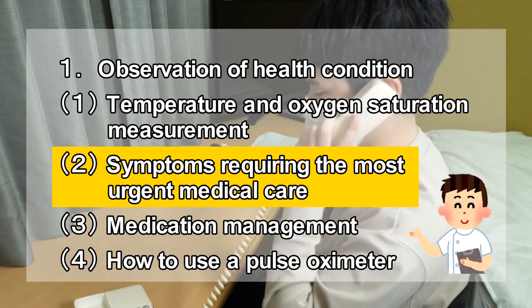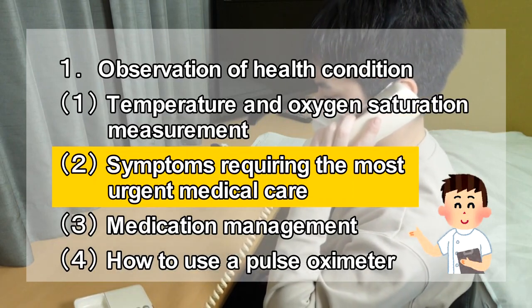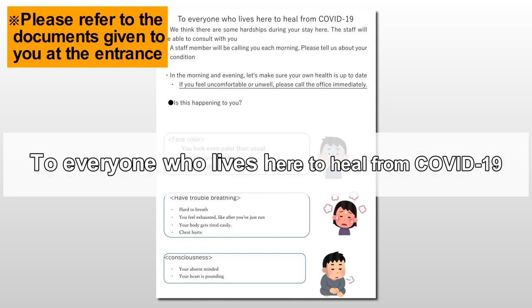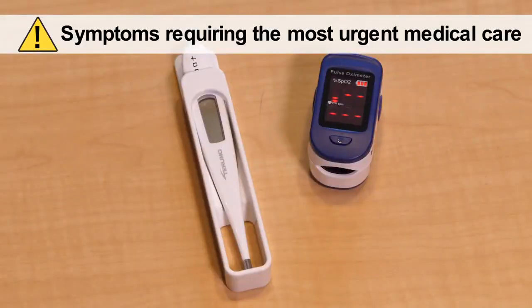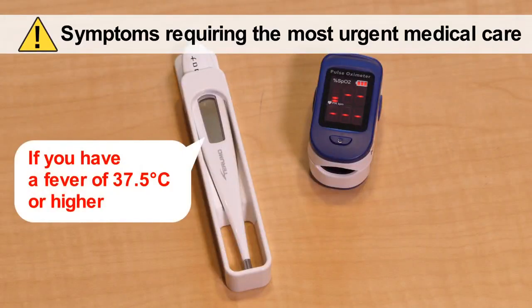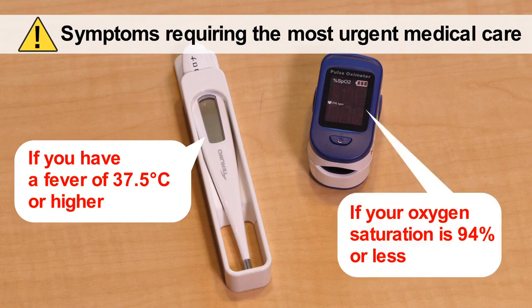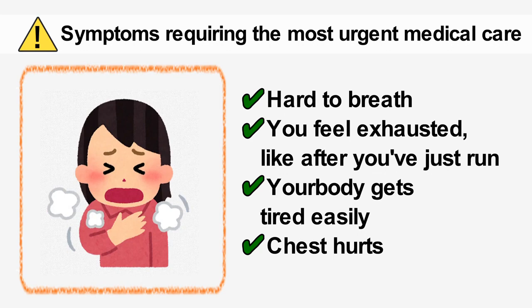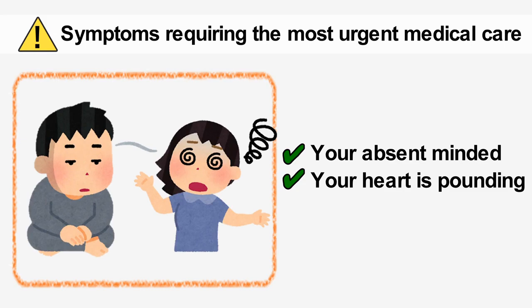Next, we will explain symptoms requiring the most urgent medical care. Please open the page for patients staying at the temporary accommodation for recovery — points to note when recovering from COVID-19. If you have a fever of 37.5 degrees Celsius or higher, if your oxygen saturation is 94% or less, or if you have any of the listed symptoms such as pale complexion or shortness of breath, please contact the staff office immediately.